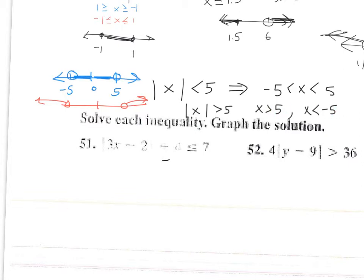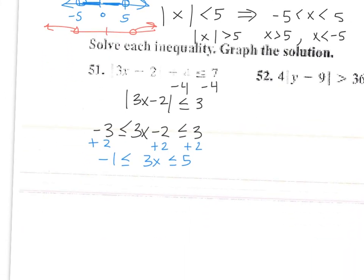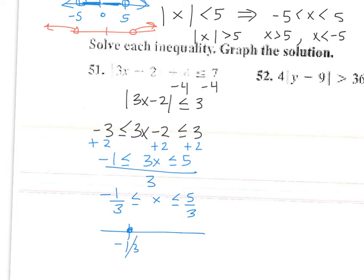For problem 51, this is a less than case, so take 3x minus 2 and write it between negative 3 and 3: negative 3 less than or equal to 3x minus 2 less than or equal to 3. Solving gives negative 1 less than or equal to 3x less than or equal to 5. Dividing by 3: negative 1/3 less than or equal to x less than or equal to 5/3. Shade in between with closed dots.